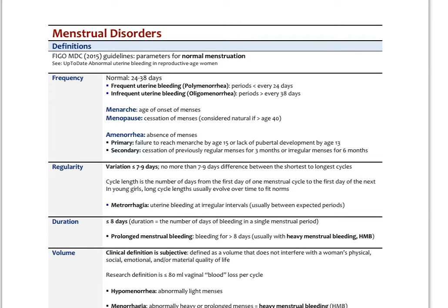Before we talk about any menstrual disorders, it's important to look at some of the definitions of what a normal menstruation is. These are the FIGO MDC 2015 guidelines, and you can read more about this on UpToDate under the section 'abnormal uterine bleeding and reproductive age women.' So typically we look at frequency, regularity, duration, and volume.